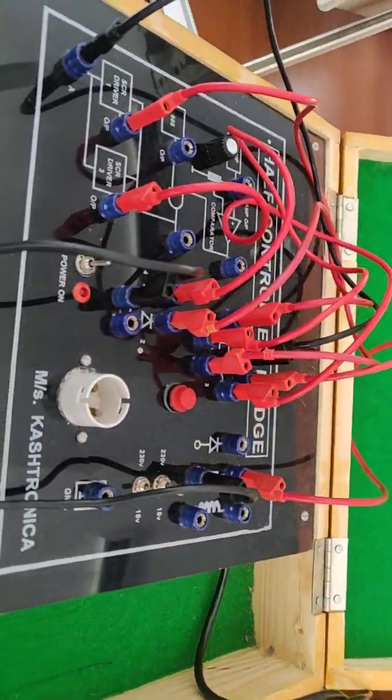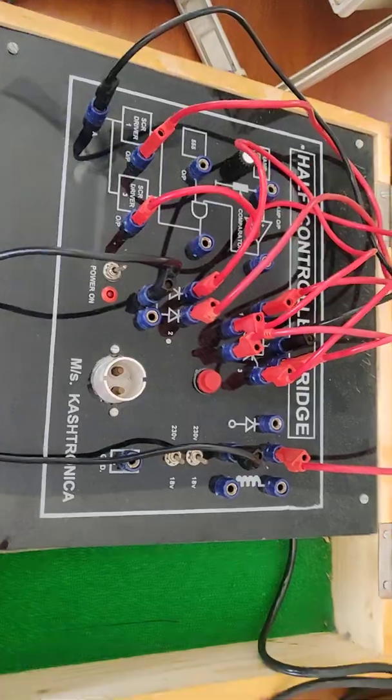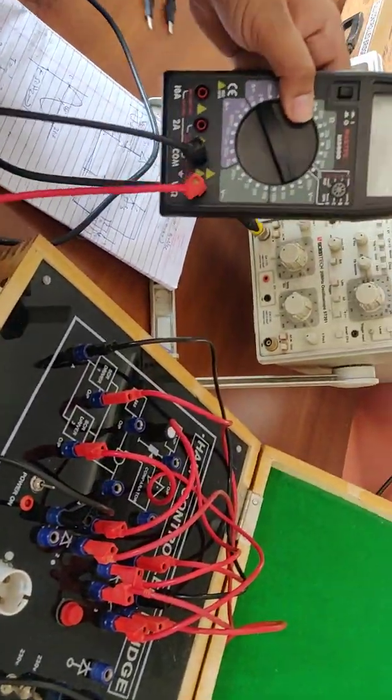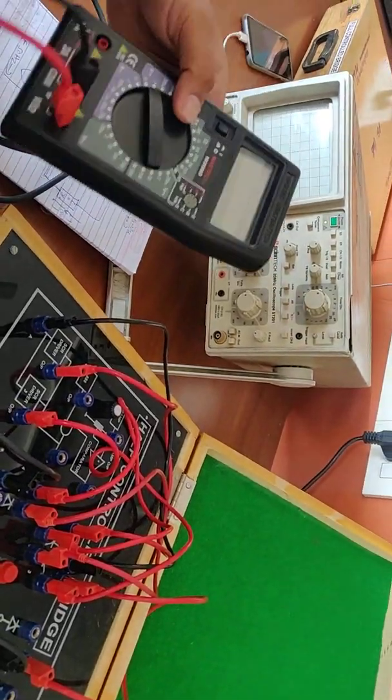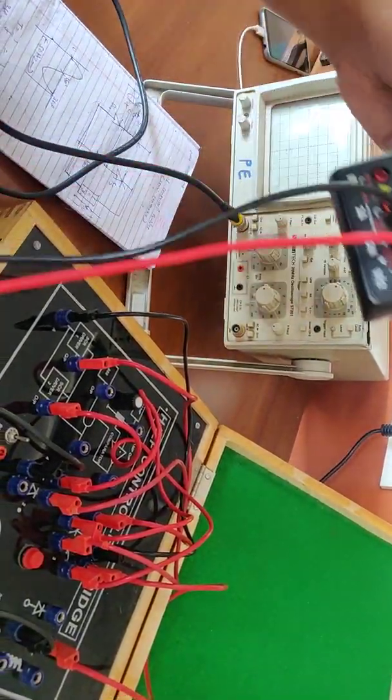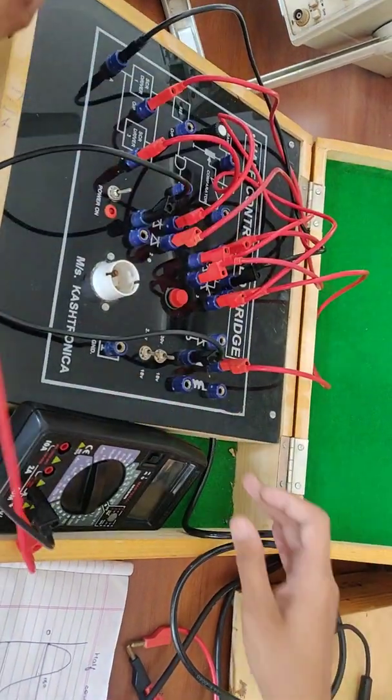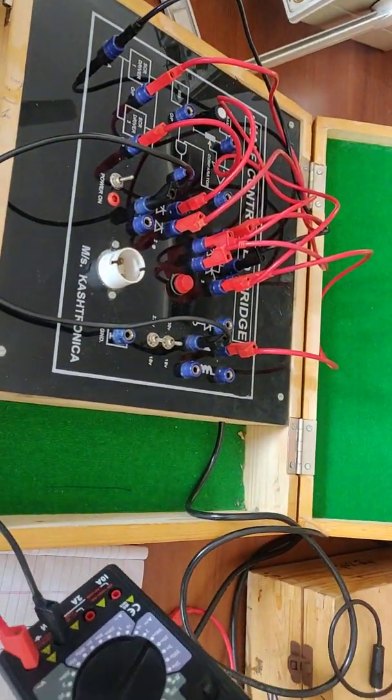Now for calculation we use two devices, one is a DMM and one is a CRO. The DMM gives us the practical value and with the help of CRO we get the theoretical value also.